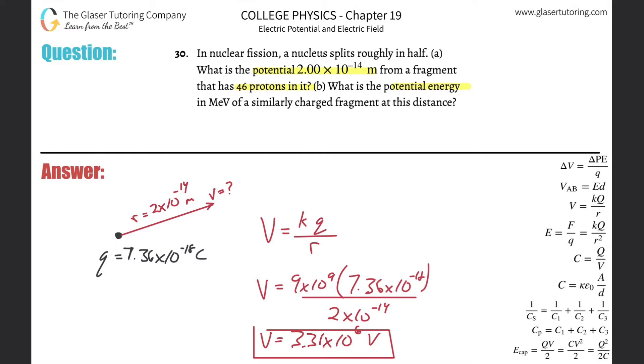Now letter B, what is the potential energy in mega electron volts of a similarly charged fragment at this distance? So now I need to basically relate voltage to potential energy or to energy difference. And we know that via the formula over here on the right hand side, it's that the potential difference V is basically going to equal the difference in potential energy divided by that charge itself. So if I want to find the potential energy, you just simply cross multiply. It'll be the voltage times the charge.